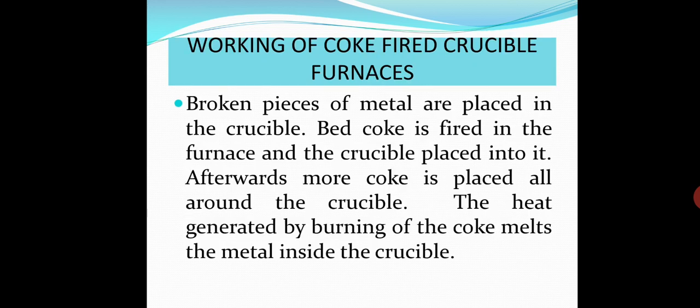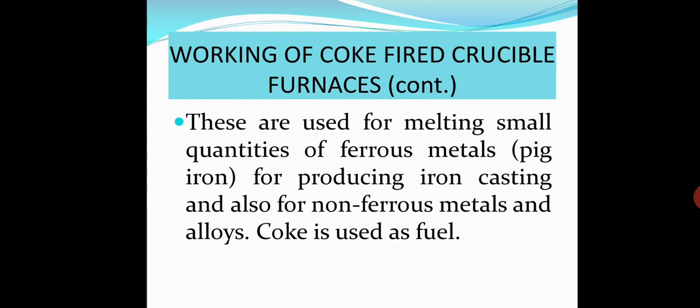Broken pieces of metal are placed in the crucible. Bed coke is fired in the furnace and the crucible placed into it. Afterwards, more coke is placed all around the crucible. The heat generated by burning of coke melts the metal inside the crucible.